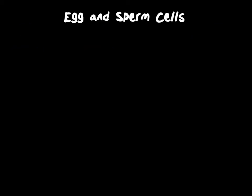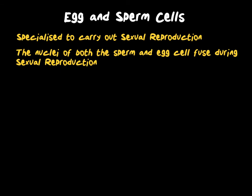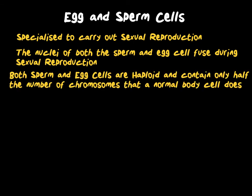Both egg and sperm cells are highly specialised in order to carry out sexual reproduction. The nucleus of the egg cell will fuse with the sperm cell to create a fertilised egg, which will become a zygote, then develop into an embryo before eventually becoming a newborn baby. The nuclei of the egg and the sperm cell both contain half the number of chromosomes that the rest of our body cells do. Our normal body cells are diploid and contain 46 chromosomes, whereas both egg and sperm cells are haploid, meaning they only contain 23 chromosomes.